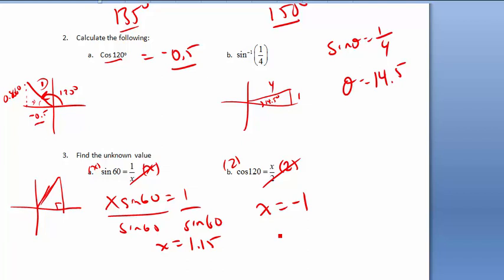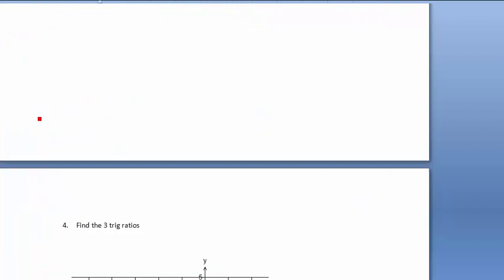That one looks interesting because that comes back to this one over here. We knew it was adjacent over hypotenuse, and it ends up being the cos of 120 we know is this length right here. Because the sine of 120 is 0.8660. So the cos of 120 is negative 0.5. And negative 0.5 is the same thing as negative 1 over 2. So x had to be negative 1 because negative 1 over 2 gives us that negative 0.5. So that's where it sort of ties together.